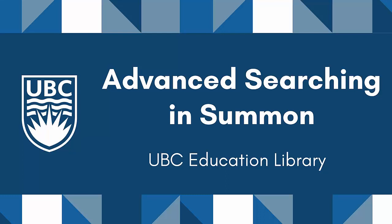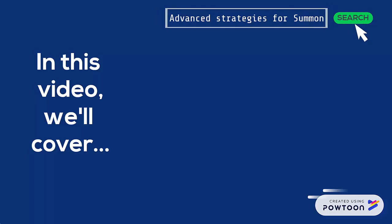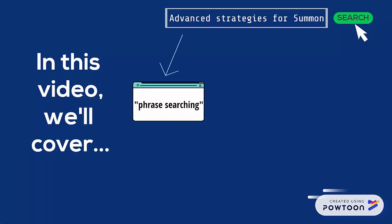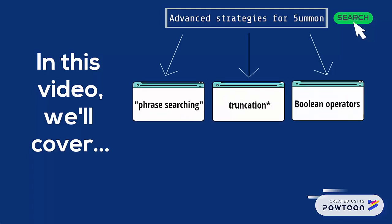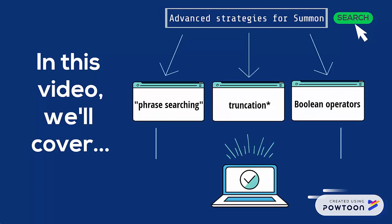Welcome to another Education Library research tutorial. In this video, I'll cover advanced strategies for searching in UBC Library's search engine Summon, including phrase searching, truncation, and Boolean operators, which you can use to make your searching more effective.